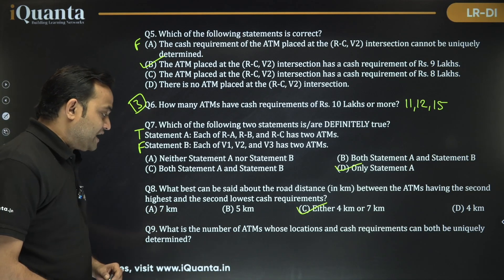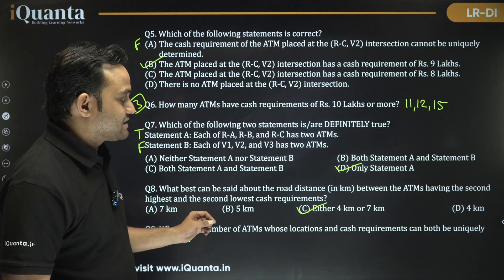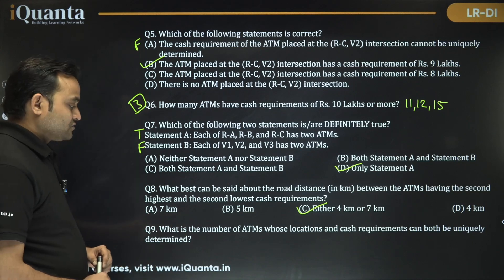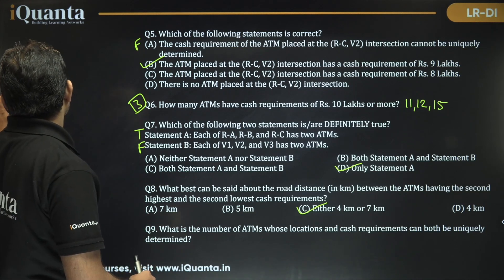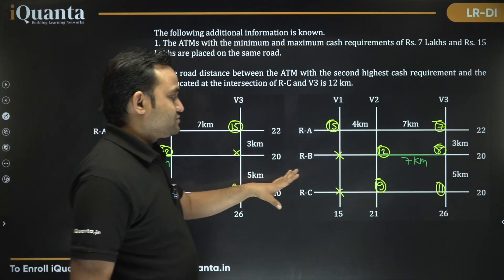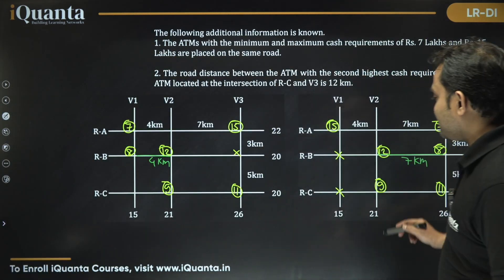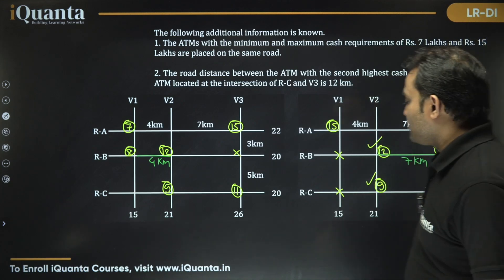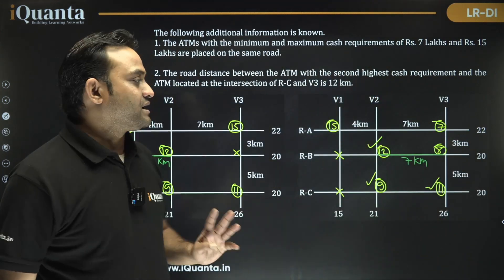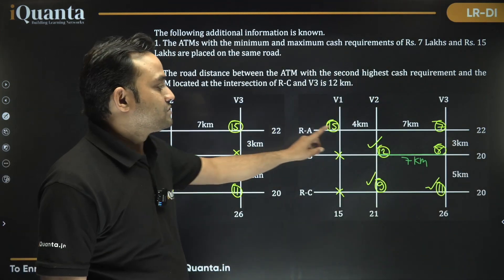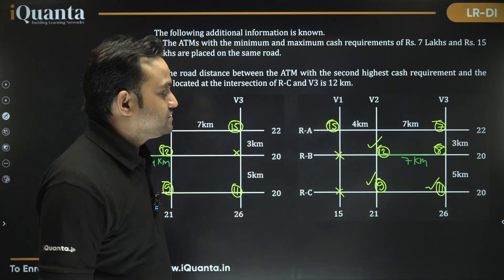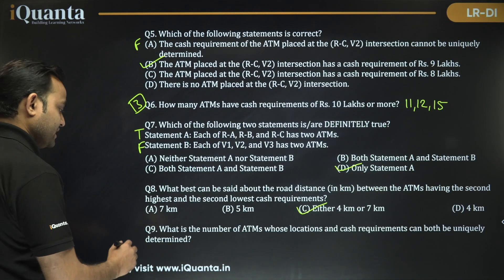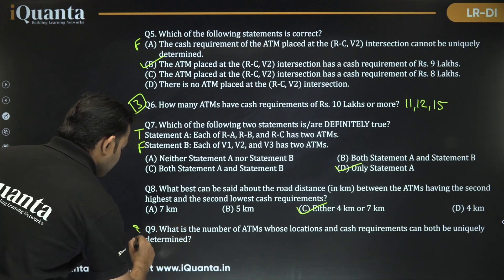Question 9: How many ATMs have both their location and cash requirement uniquely determined? Out of all six ATMs, only four positions are fixed across both cases — but three of those have uniquely determined values and locations. The remaining ATMs have positions that vary between cases. So the answer is three ATMs.